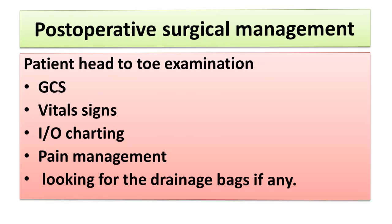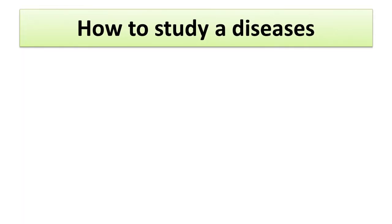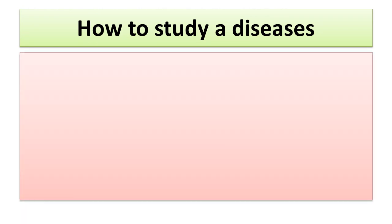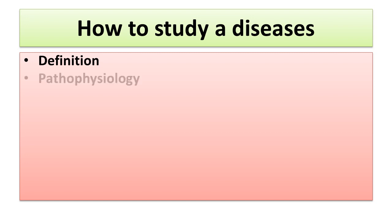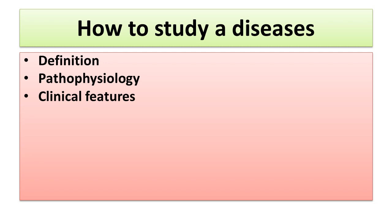Another common question among students is how to study a disease. To learn about any disease, first of all you should define the disease. The second thing is pathophysiology — 'patho' means abnormality and 'physiology' means function — so pathophysiology means what kind of abnormality occurs in the normal functions, and by this way you will be able to understand the disease very well.